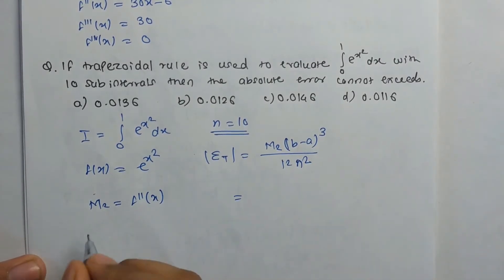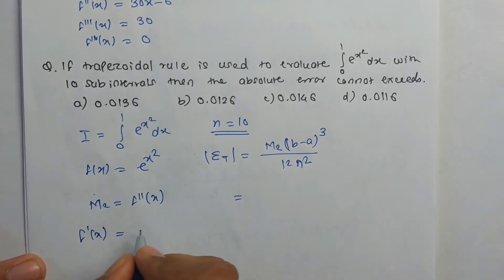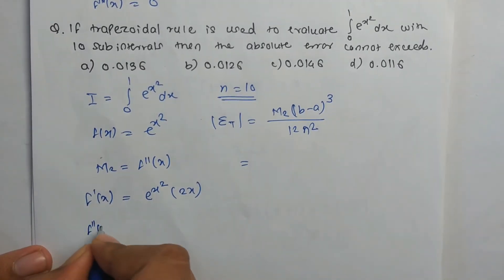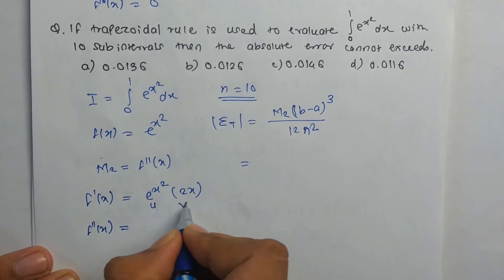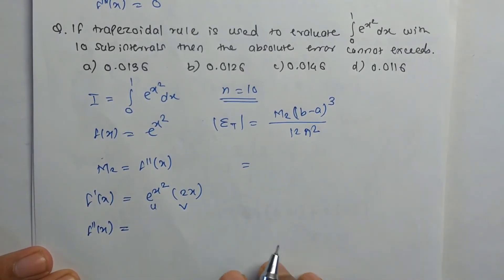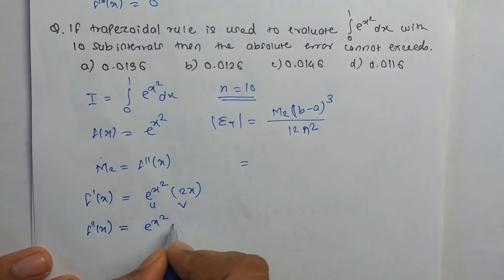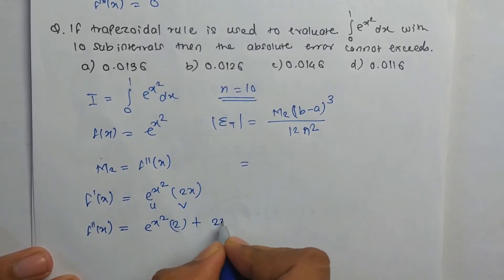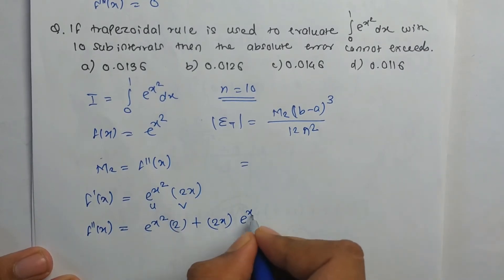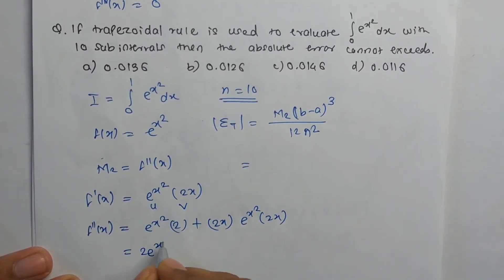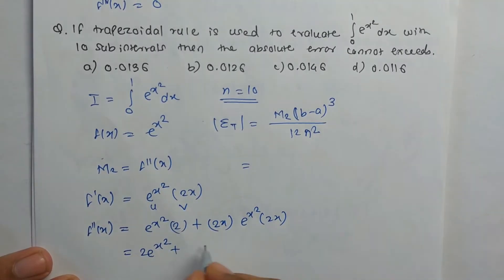Finding the derivatives: f'(x) = e^(x²) × 2x. For the second derivative, applying the product rule (u = e^(x²), v = 2x): f''(x) = e^(x²) × 2 + 2x × e^(x²) × 2x, which simplifies to f''(x) = 2e^(x²) + 4x² e^(x²).